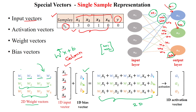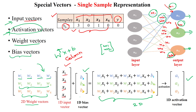Finally, the activation values — the output of A1, A2, A3 — can be represented using vectors. The weights can be represented using vectors. Activation values can also be represented using vectors. Input values can be represented using vectors, and bias values can also be represented using vectors.